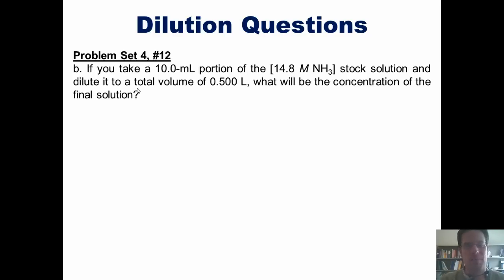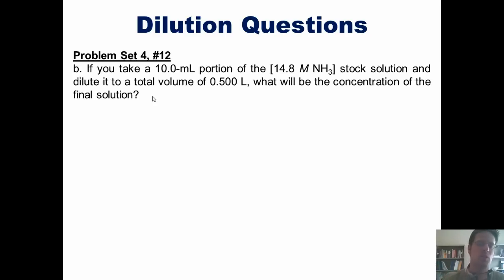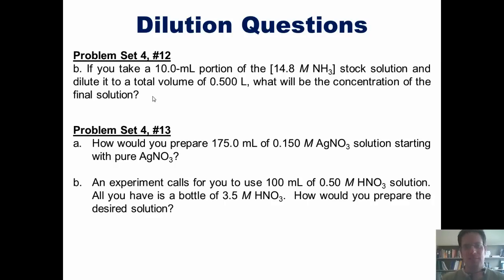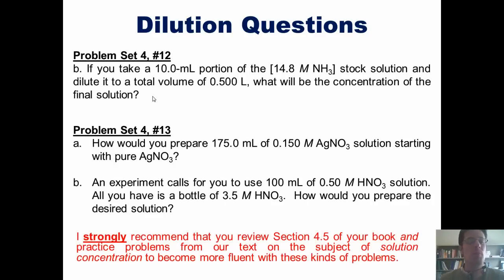This brings us back to our previously mentioned problem: if you took a 10 milliliter portion of 14.8 molar ammonia stock solution and diluted it to a total volume of 0.5 liters, what would the concentration of the final solution be? Here are some additional questions for practice — I'll let you read them and see if you can solve them on your own. I strongly recommend that you review section 4.5 of our text and practice problems on solution concentration to become more fluent with these kinds of problems.